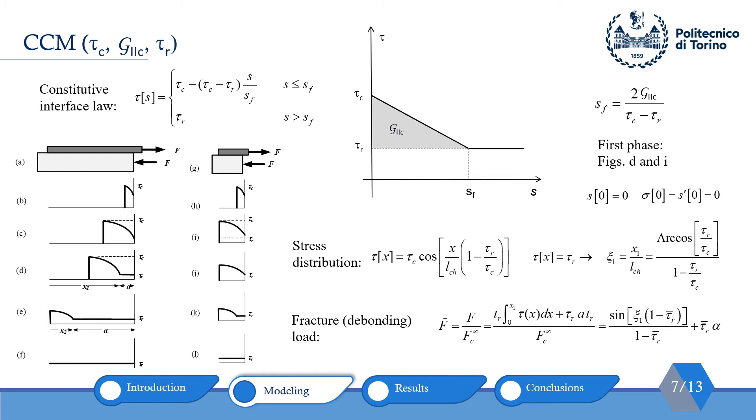The constitutive law for this model is presented here and you can see a visualization of it in this figure. In this model also, there is a difference between short and large bond lengths. As in large bond lengths, the cohesive zone has enough space to fully develop. On the other hand, for each case, we need to solve the problem for two different phases. For long bond lengths, for instance, first phase is from B to D and the second phase would be from E to F.